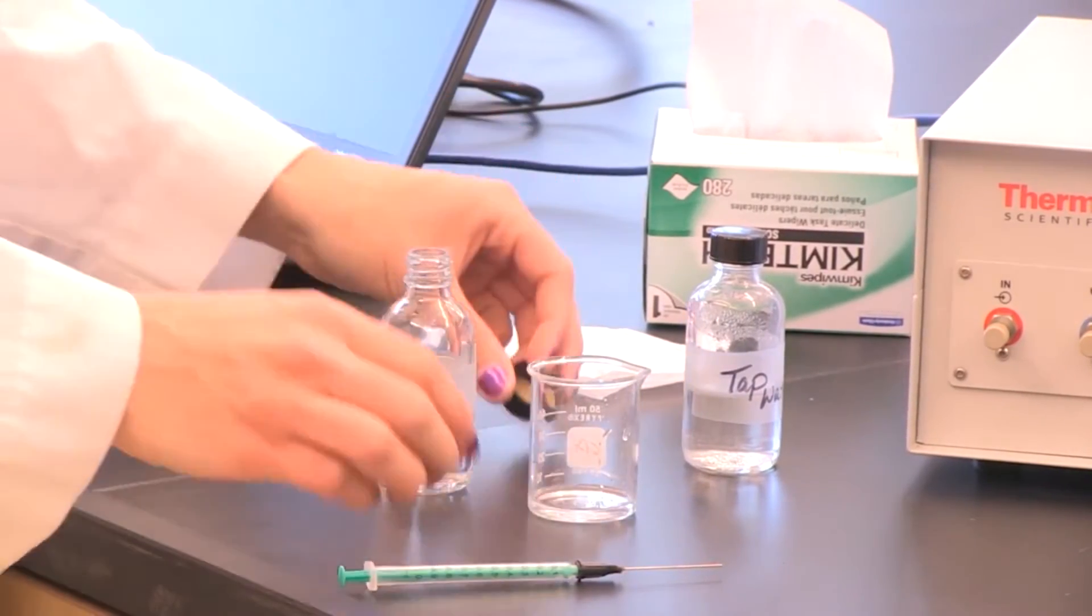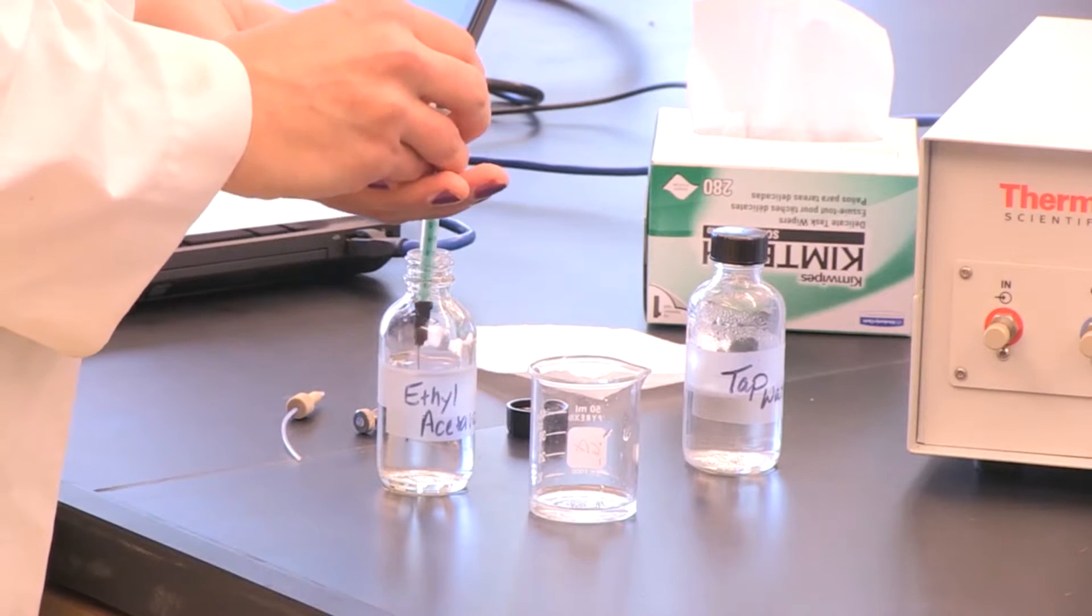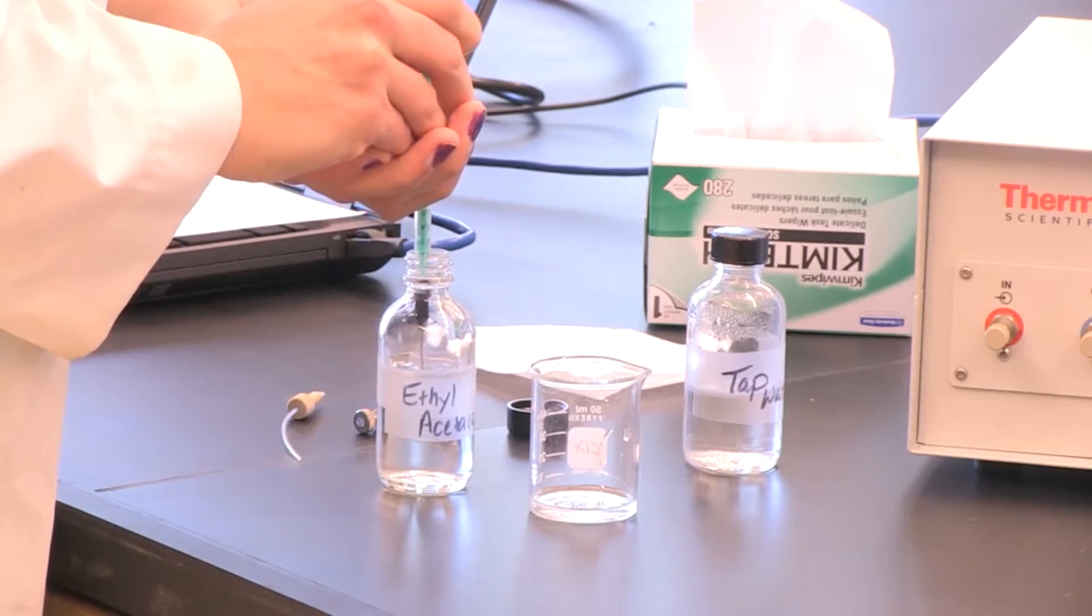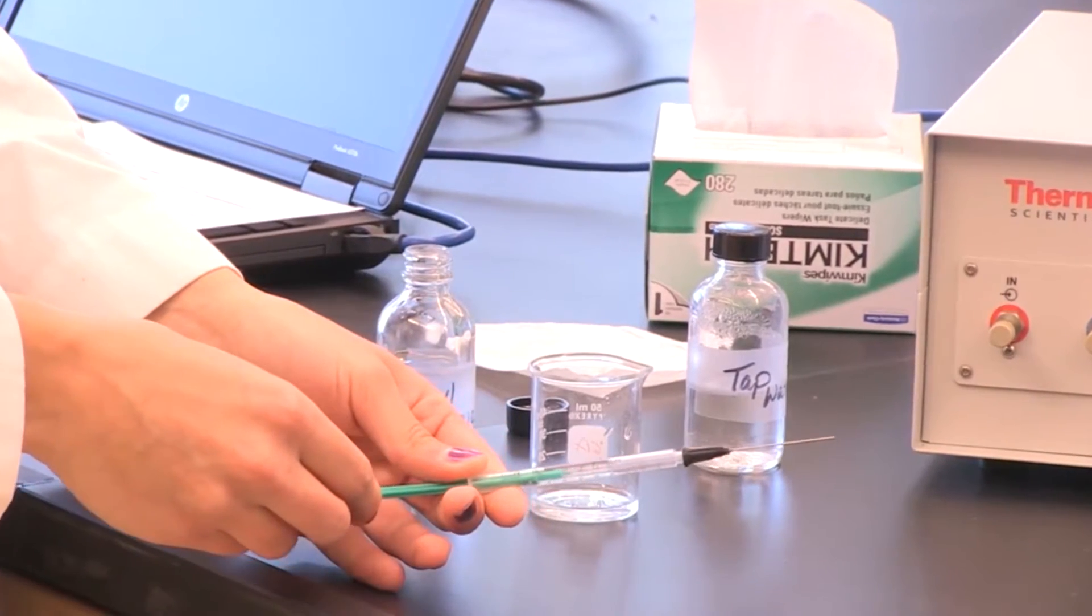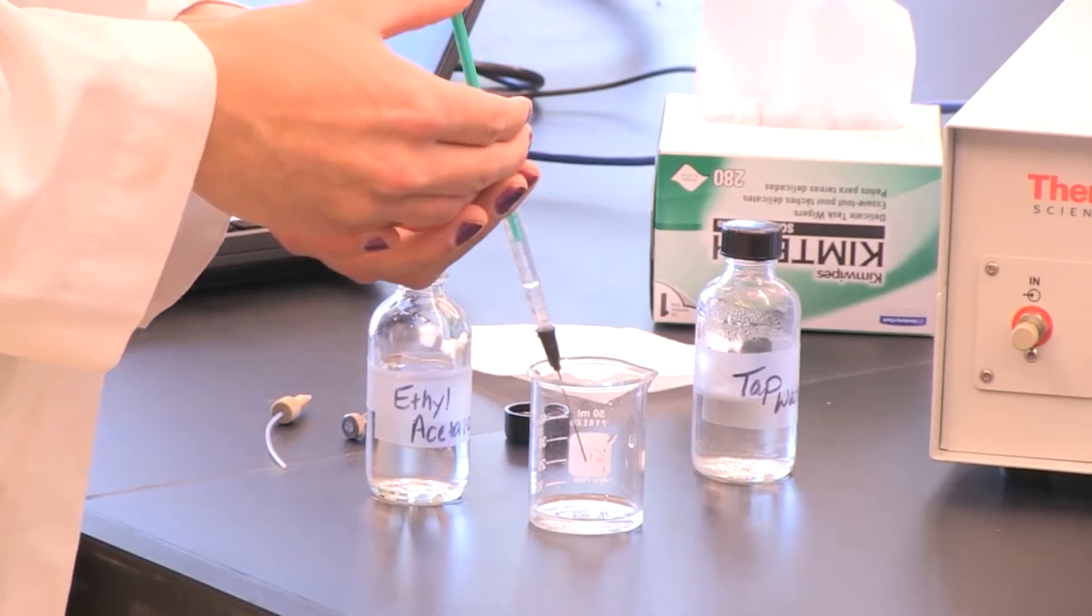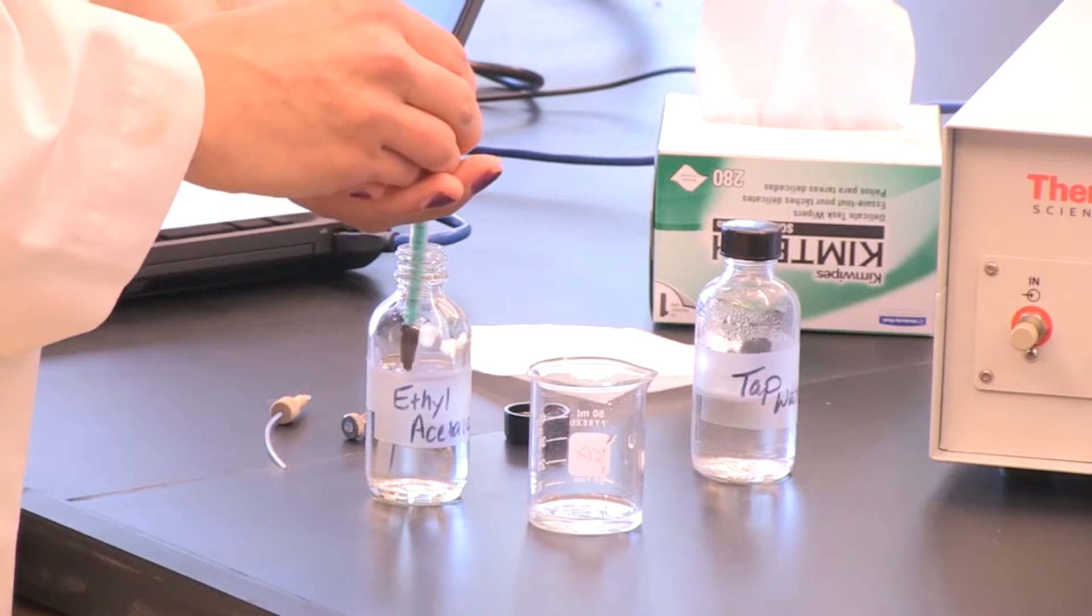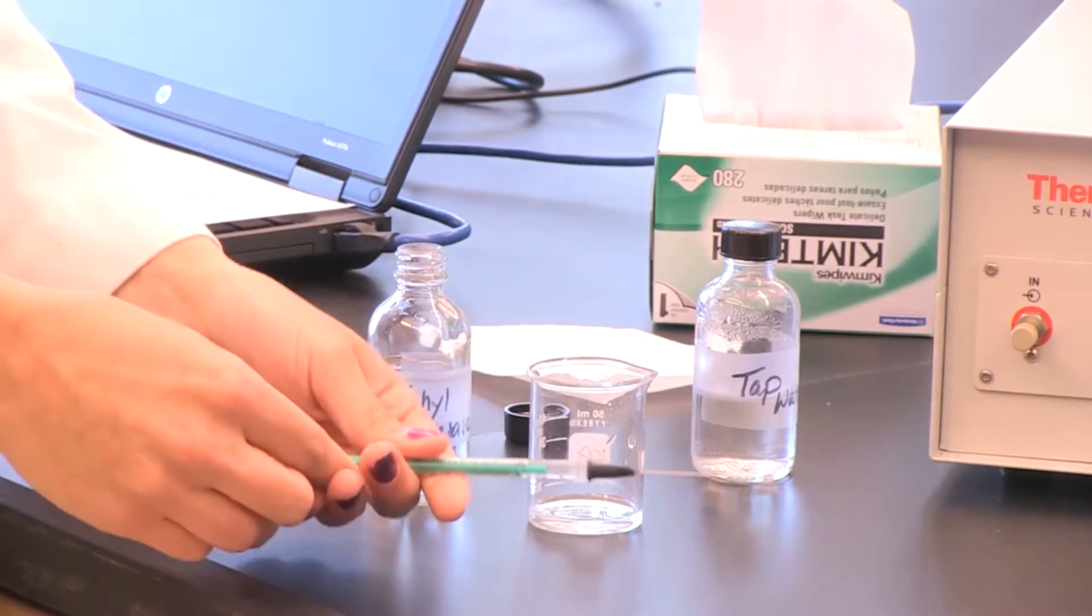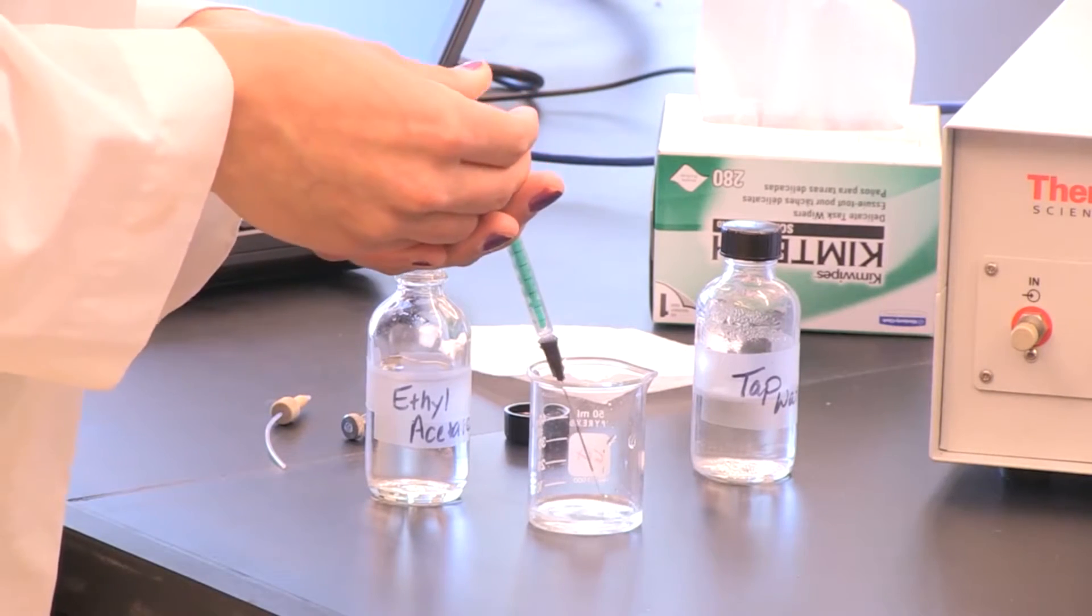The first thing you're going to do is rinse your syringe with your sample. You're going to do this just by pulling in about 0.1 to 0.2 milliliters of your sample, and then pull it all the way through the syringe so that you rinse the whole thing, and then release it into the waste container beaker. We're going to do this again. We do it twice so that way we make sure that we thoroughly rinse it. So we pull all the way through again, and then release into the container.